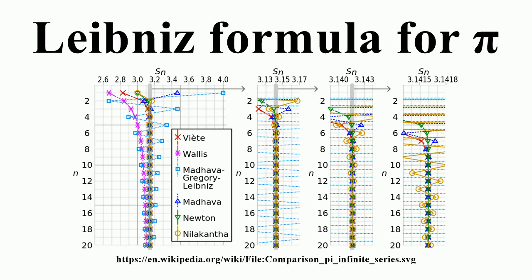Euler product: the Liebner's formula can be interpreted as a Dirichlet series using the Dirichlet character modulo 4. As with other Dirichlet series, this allows the infinite sum to be converted to an infinite product with one term for each prime number. Such a product is called an Euler product. In this product, each term is a superparticular ratio, each numerator is an odd prime number, and each denominator is the nearest multiple of 4 to the numerator.